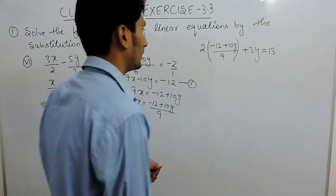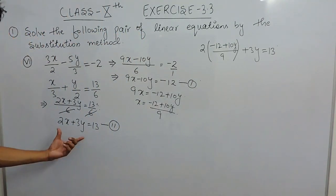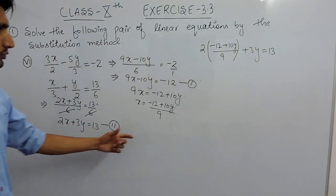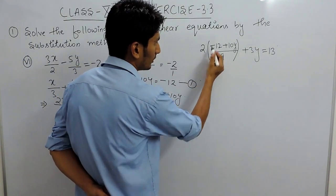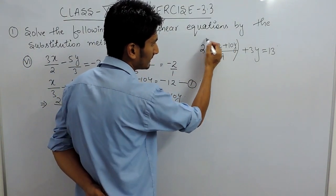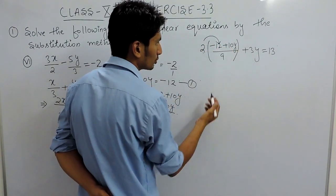So our equation have become this because this value of x is substituted with this value. After that you can simply solve this. To open the bracket you have to multiply this with both the terms, so 2 multiplied by 12 is minus 24 and 2 multiplied by 10 is 20y